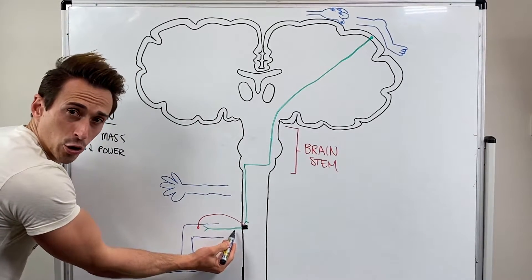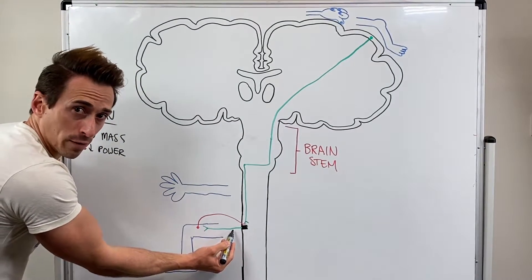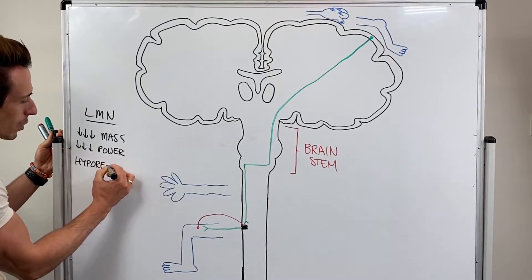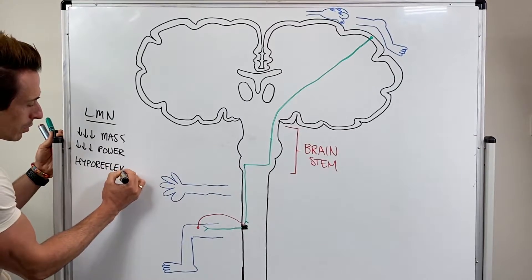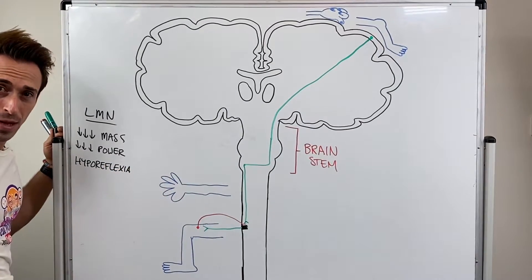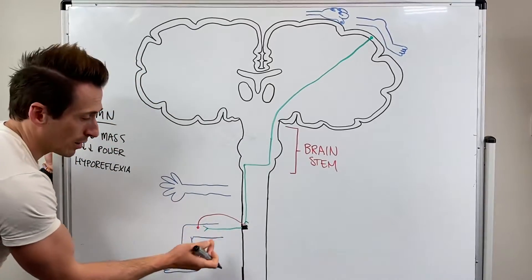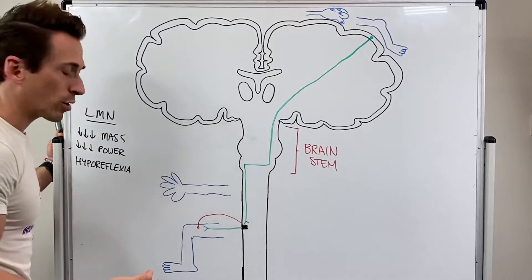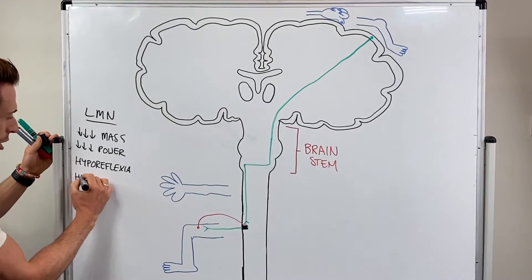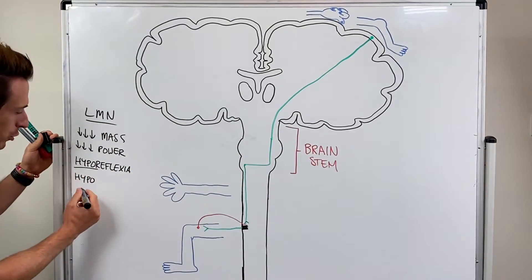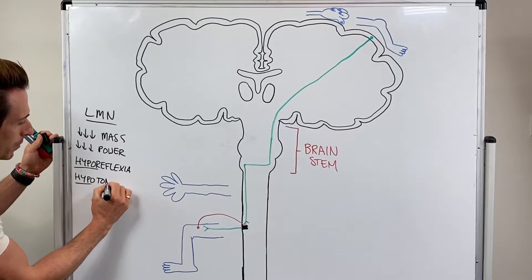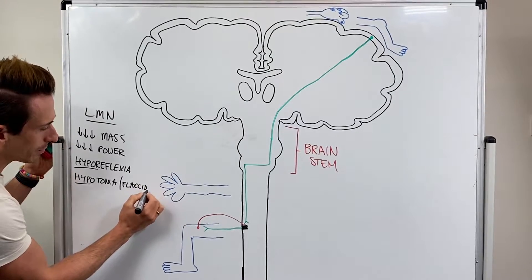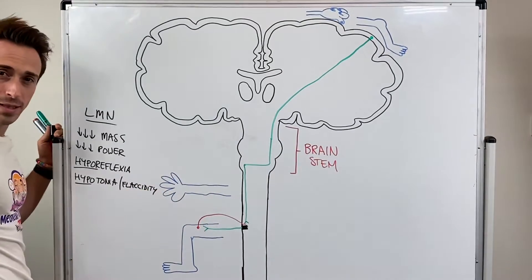Without the lower motor neuron, there's going to be no reflex. So you get hyporeflexia. Now in addition to that, this muscle that's usually innervated by this lower motor neuron, it's not going to contract. So you're going to have hypo, so remember hypo means under or reduced, hypotonia, also known as flaccidity, so the muscle will be flaccid.